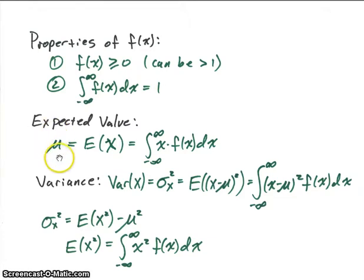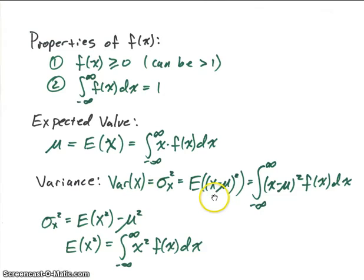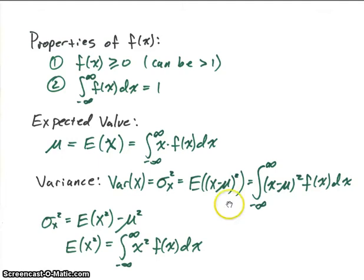For the expected value, we're going to call it mu. The expected value of our random variable x is an integral from minus infinity to infinity. We've got x times our density function f of x, and we just integrate that from minus infinity to infinity. Whatever we have inside the expected value expression, we multiply by our density function and integrate.